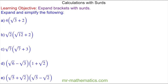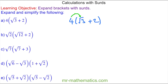I'm going to begin with question A, where we have 4 lots of (root 3 plus 2). To expand these brackets I'm going to multiply everything on the outside, which is a 4, by everything on the inside. So we begin with 4 multiplied by root 3, which we can write as 4 root 3, and then we have 4 multiplied by 2, which is 8.